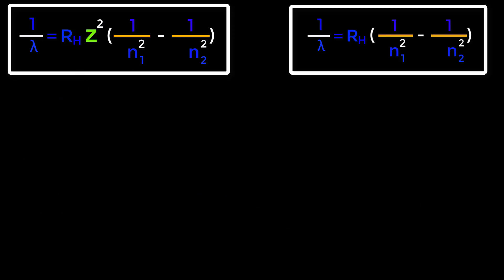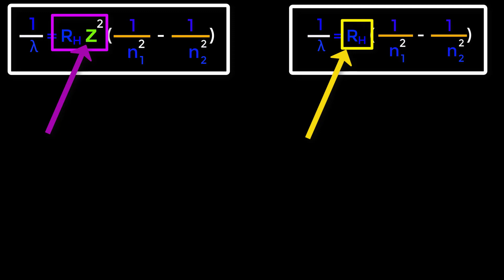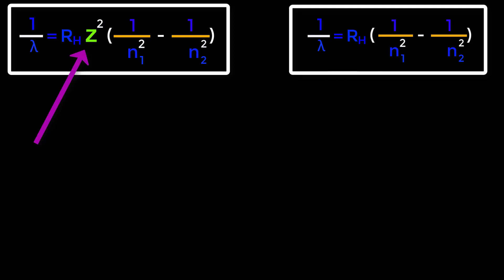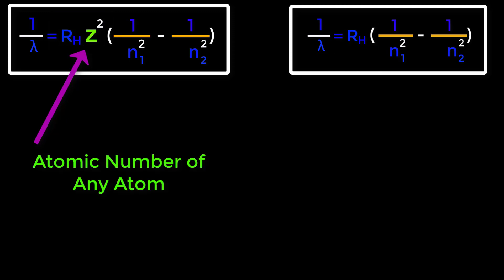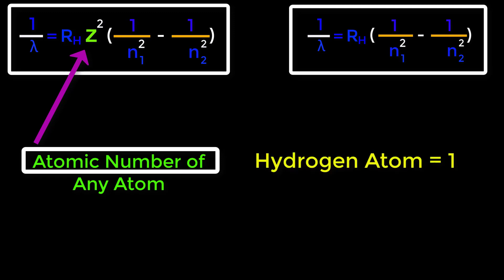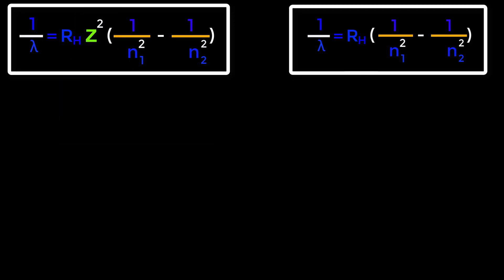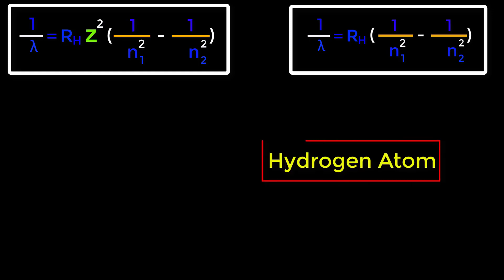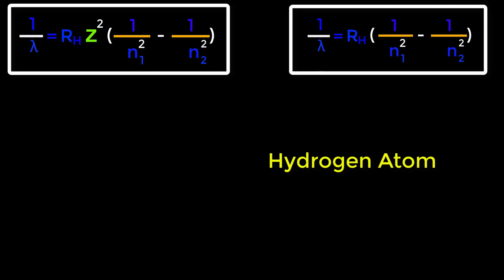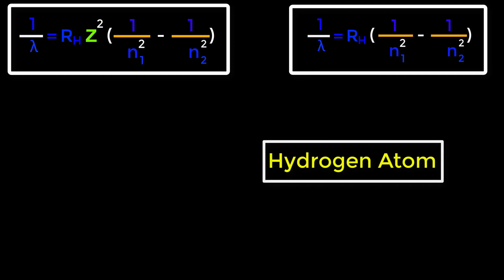Now I am going to explain why we use the short form. Z square is absent here because Z represents the atomic number of any atom. Since the atomic number of hydrogen is 1, we need not write Z square. If we analyze test papers, we see that only for hydrogen atom are we asked to determine wavelength, so we will use this short form repeatedly.